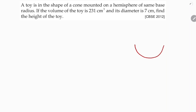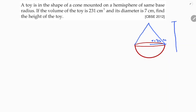The toy is in the shape of a cone mounted on a hemisphere. So we have a hemisphere at the base and a cone on top. The diameter is 7, so the radius is 7 by 2 centimeters. We need to find the total height of the toy.